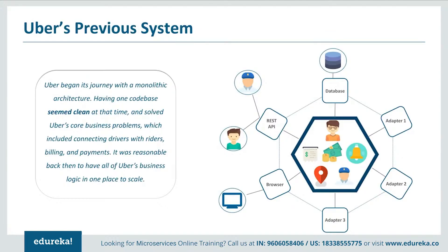Let's have a look at this architecture. Initially, they had a REST API with which the passenger and the driver were connected — the mobile API was connected to the REST API which was then connected to the monolithic architecture as a backend server. For people accessing through web UI, they were also connected to the same server. There were three more adapters for different functionalities such as notifications, sending mails or messages, billing, and payment. Finally, a MySQL database was used to capture all their data.